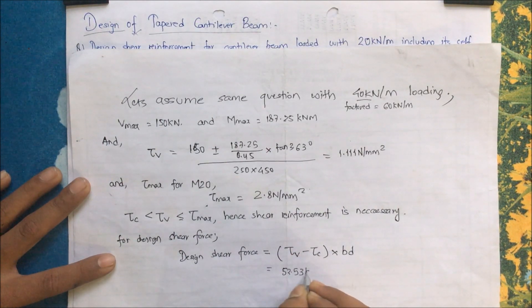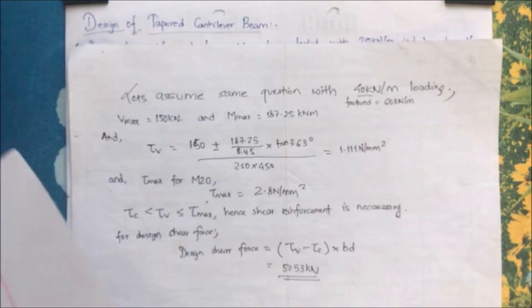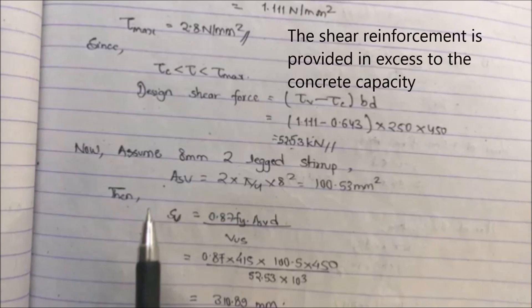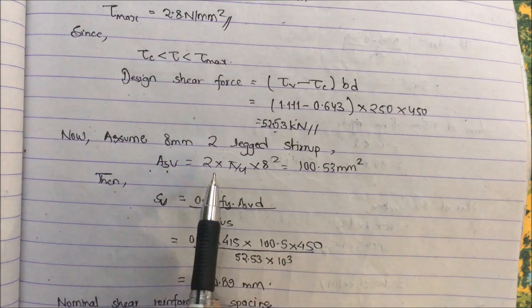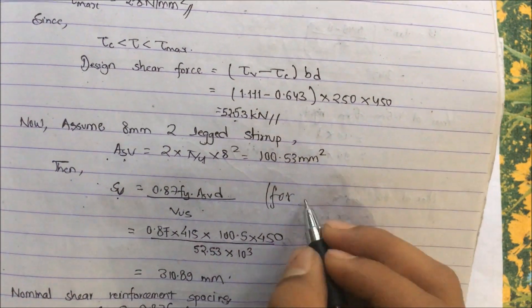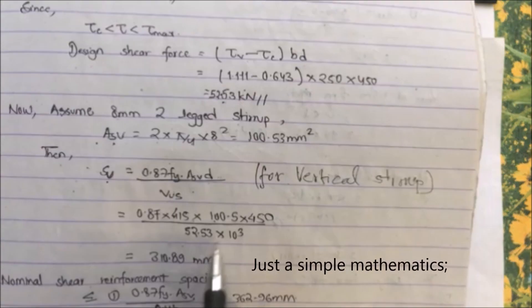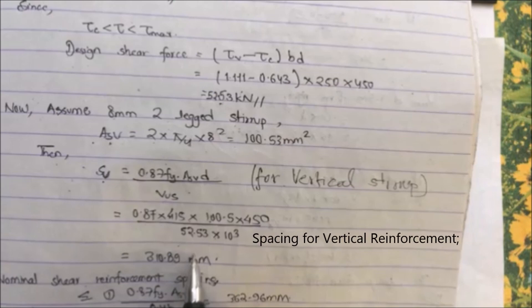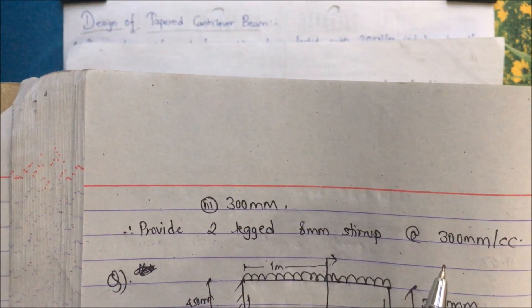The design shear force = (tau_v − tau_c) × b × d = 52.53 kN. Assuming 8 mm two-legged stirrups with A_sv = 100.53 mm², the stirrup spacing = 0.87 × 415 × 100.53 × 450 / (52.53 × 10³) = 310.89 mm. Comparing with nominal spacing limits, provide two-legged 8 mm stirrups at 300 mm center to center.